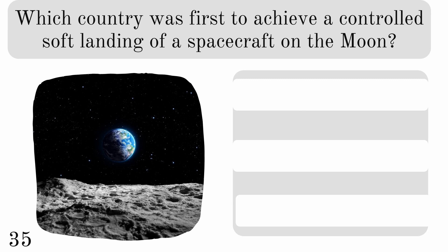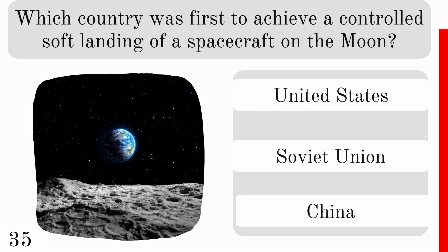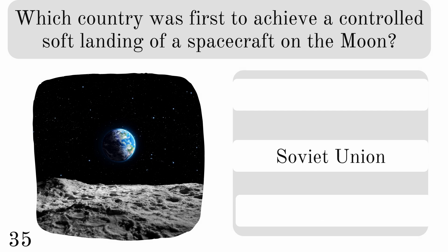Which country was first to achieve a controlled soft landing of a spacecraft on the Moon? The United States, Soviet Union, or China? And the answer is the Soviet Union with the Luna 9 spacecraft.